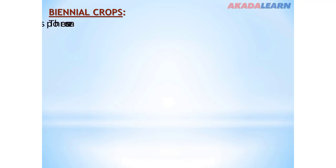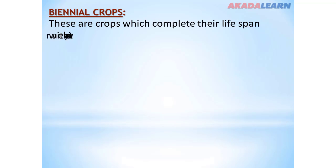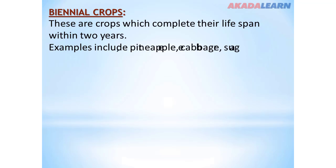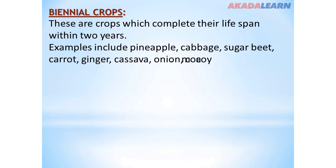Next, we have the biennial crops. These are crops which complete their lifespan within two years or two growing seasons. Examples include pineapple, cabbage, sugar beets, carrot, ginger, cassava, onion, and cocoa.